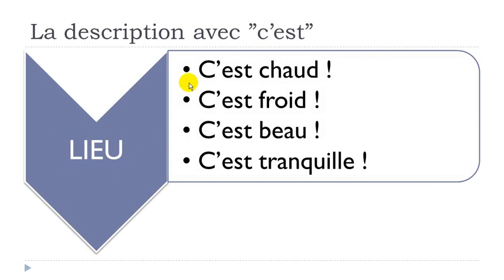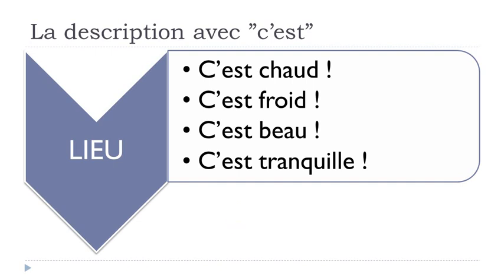Remember, 'c'est' is a very common way to describe things. The adjective that comes after should always be at the masculine form. We'll see a few examples. First, to describe a place: 'c'est chaud' — it's hot/warm; 'c'est froid' — it's cold; 'c'est beau' — it's beautiful; 'c'est tranquille' — it's quiet. All these adjectives are at the masculine form, even if the place would be feminine.